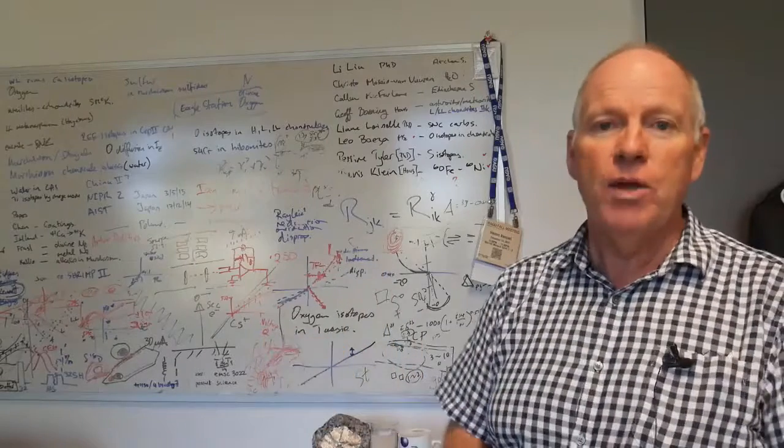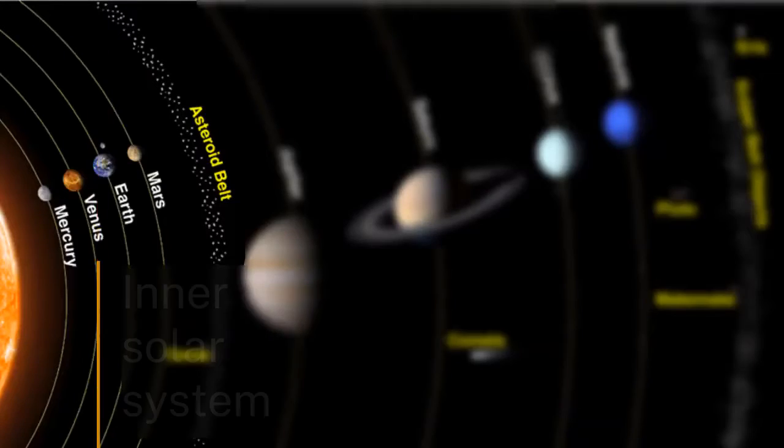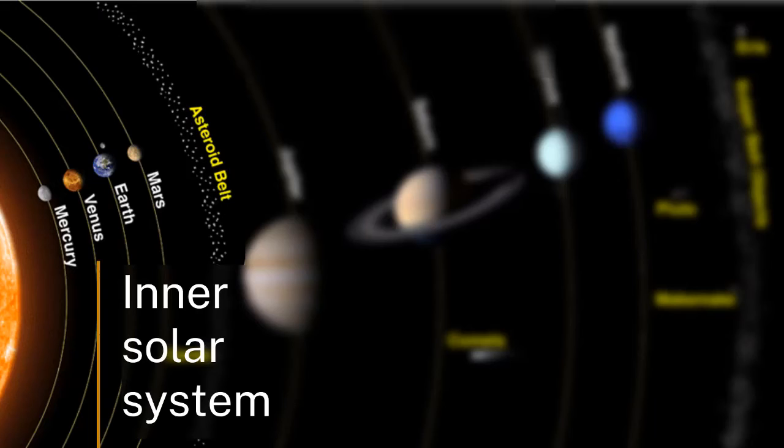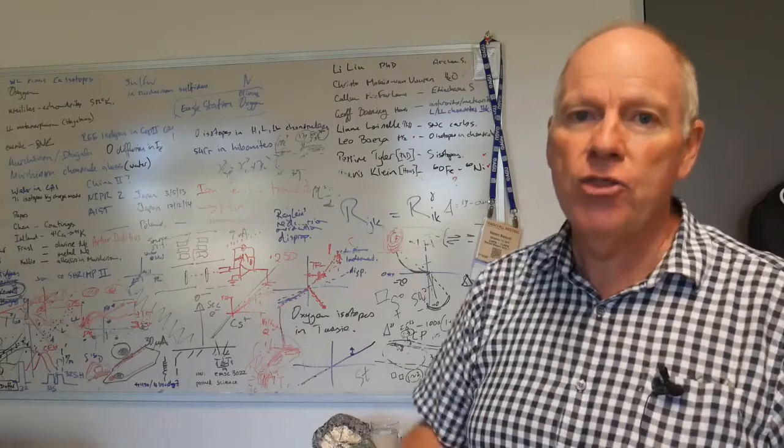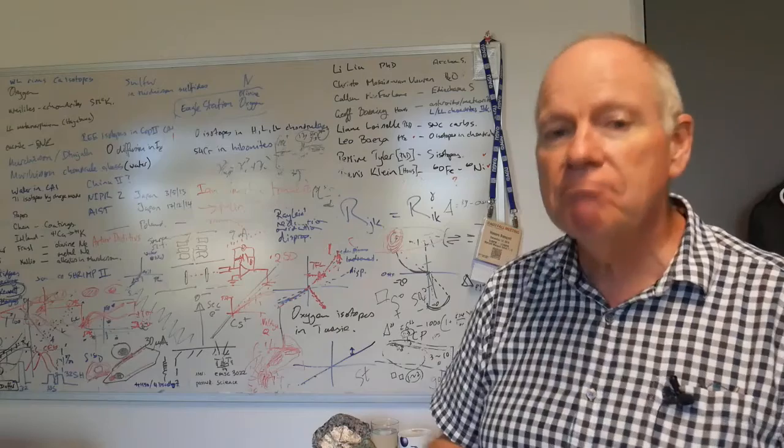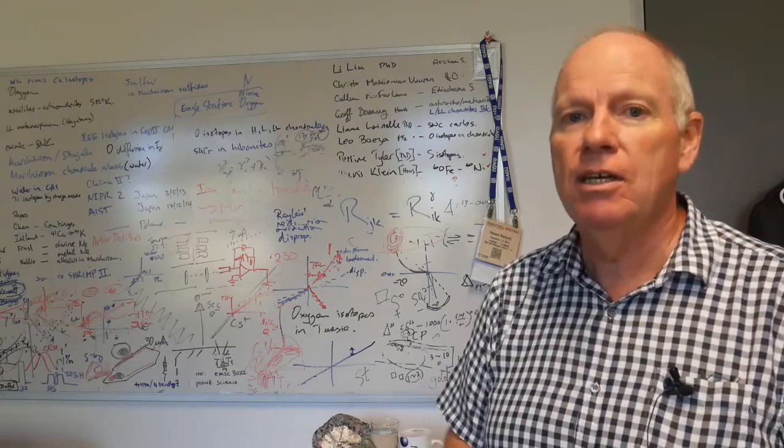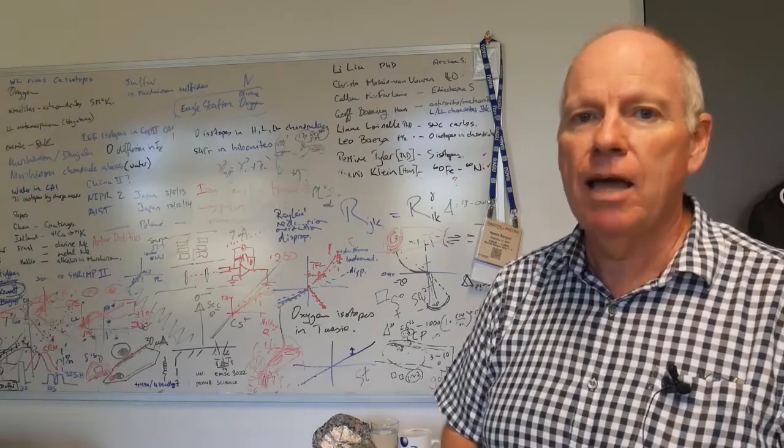On top of that, we think the inner solar system was really dry as well, and so the Earth itself was forming out of materials which didn't have that much water in it. So can we tag what's coming into our Earth in our earliest formation episodes and understand where that water was coming from?